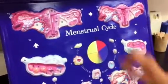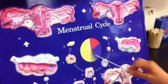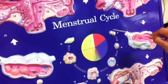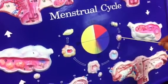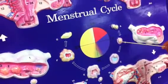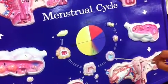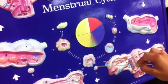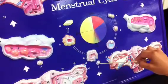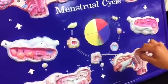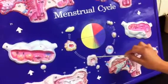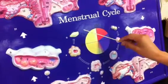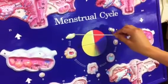This is the ovarian menstrual cycle. A are the primary follicles. These are the secondary follicles. C is a Graafian follicle. D is an ovulated secondary oocyte. E is the corpus hemorrhagicum. F is the corpus luteum. G is the corpus albicans.